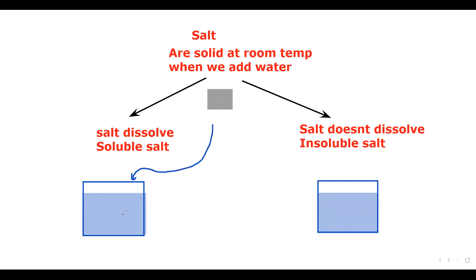When a solid salt dissolves in water, it disappears — we call that a soluble salt. But sometimes when we add the solid, the salt does not dissolve — we call that an insoluble salt. There is a table which you have to learn about soluble and insoluble salts. Some salts dissolve in water and some do not.